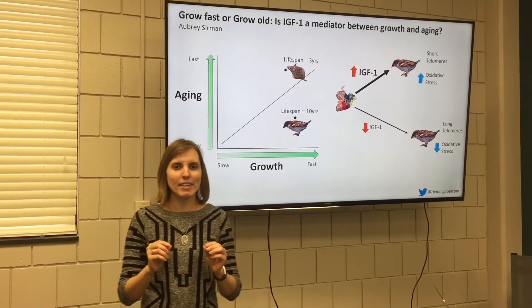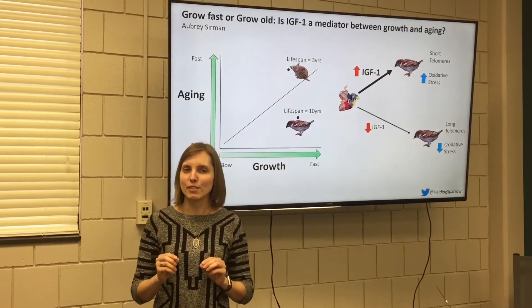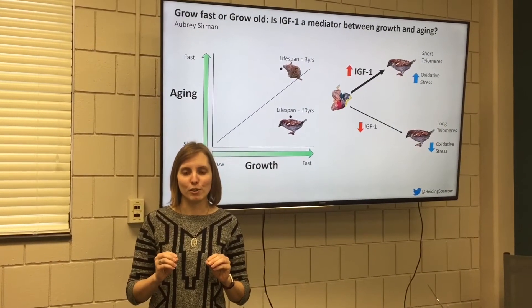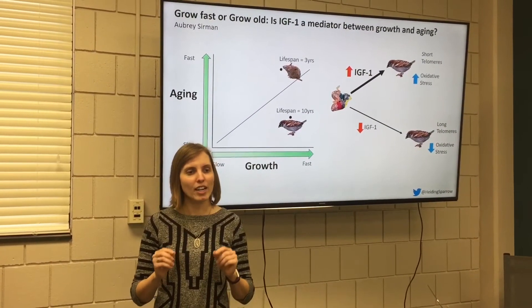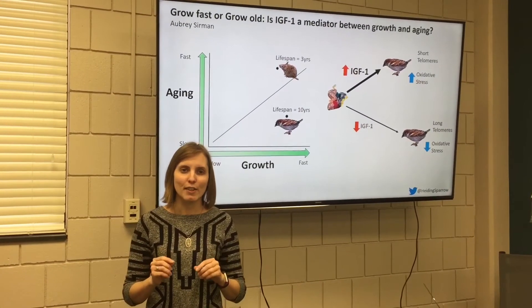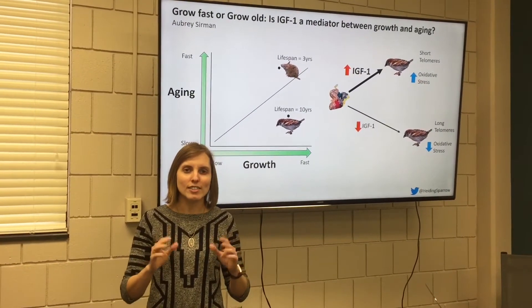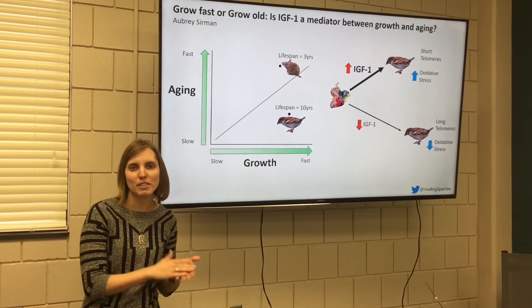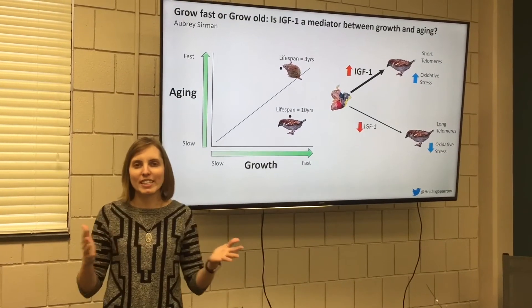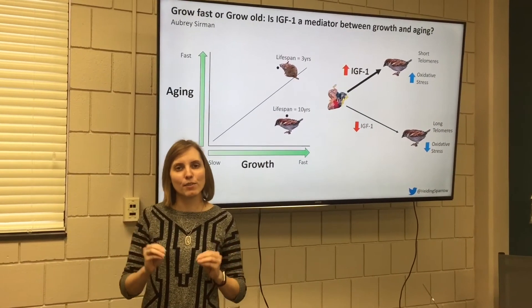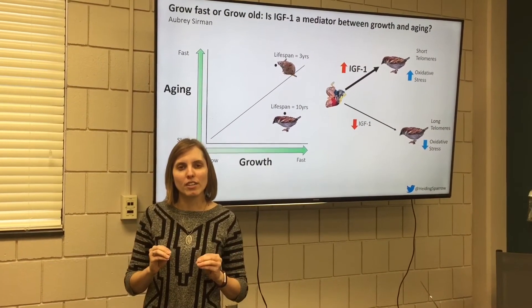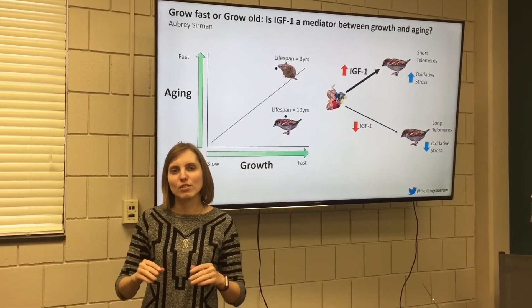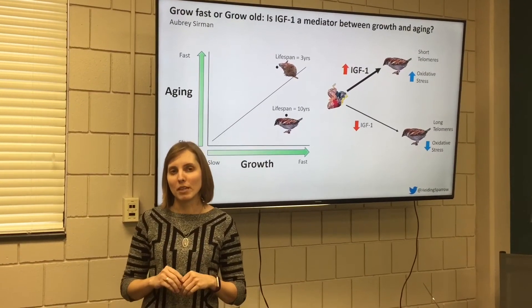One mechanism that I think might be particularly important is insulin-like growth factor one. IGF-1 is a hormone that is part of an ancient signaling pathway and can be found in tiny worms, birds, and even humans. High levels of IGF-1 are associated with increased growth and reduced lifespan in many species.